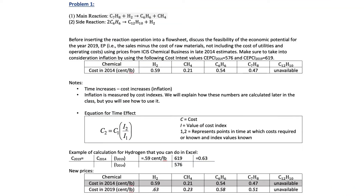For problem number one, our main goal is to calculate the economic potential for the main reaction given by reaction number one. Before inserting the reaction into a flow sheet, you typically have to discuss the feasibility of the economic potential for the year you're going to be building the plant for. We're going to be using the economic index factors from 2019.